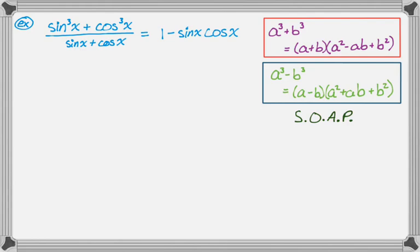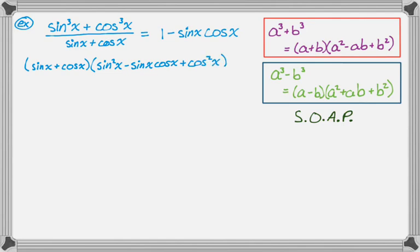So let's apply the sum of cubes to sine cubed plus cosine cubed. We're going to get (sine + cosine) times (sine² − sine·cosine + cosine²), and that's all over the denominator. What's really nice is that the denominator cancels out — which you kind of knew had to happen because the right-hand side doesn't have a function in the denominator. So however the left-hand side factors, it must include sine x plus cosine x, because that had to cancel somehow.